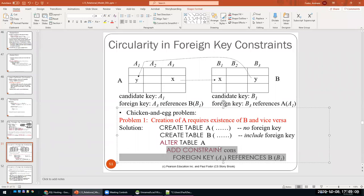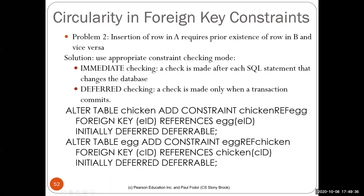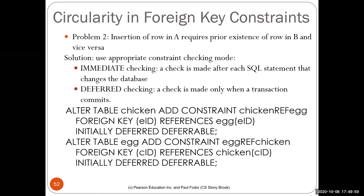For insertion with circular constraints, you need the prior existence of a row that doesn't exist yet. The solution is to defer the foreign key check — making it a 'lazy' foreign key that is only applied when needed. A transaction may contain multiple inserts, and even if the state is temporarily inconsistent, it will be consistent at the end. IMMEDIATE means checking is done immediately; DEFERRED (the default for transactions) means the check is done only when the transaction commits.